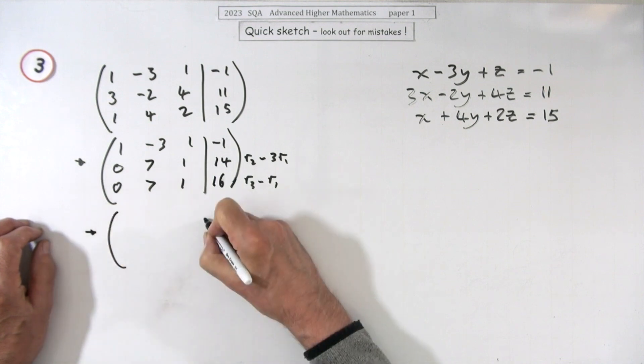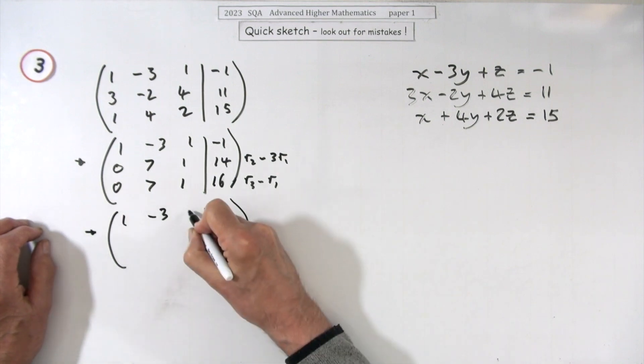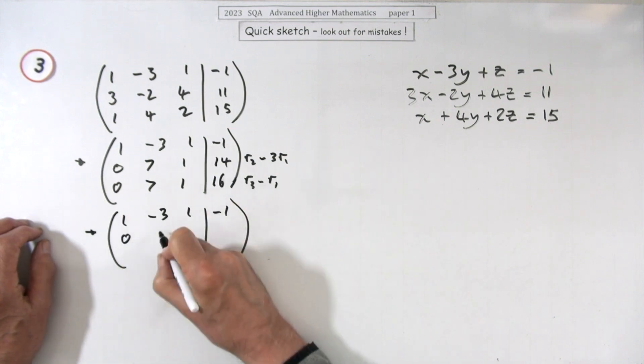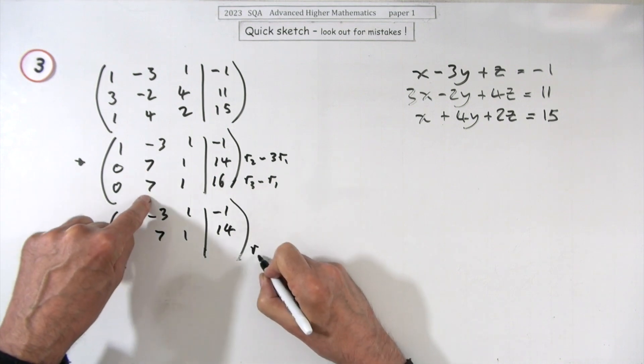I think you have to finish it off, don't you? I don't think you're allowed just to make that statement. So leave them alone: zero, seven, one, fourteen. If we go ahead with this, which would be row three take away row two,